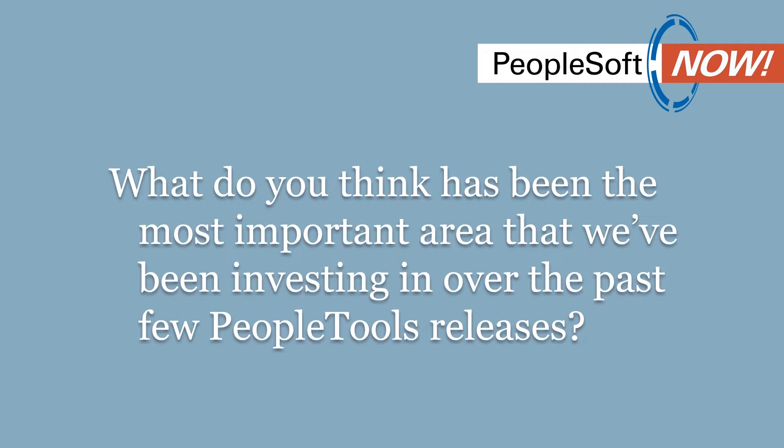What do you think has been the most important area we've been investing in over the past few PeopleTools releases? Looking at 859 and 860, we've done a lot of enhancements for search. In 859, we added navigation search and real-time indexing for search indexes, which is important if you want to search against current data. In 860, we added more enhancements for configurable search and improvements to real-time search. In 861, we've added enhancements for data partitioning, full and incremental sync, and large-volume search indexes.